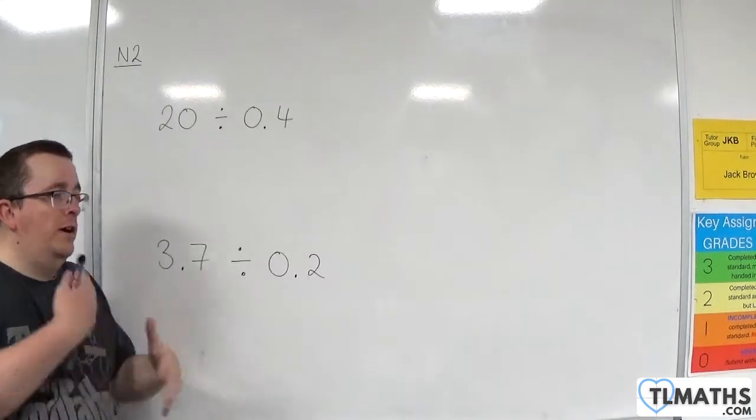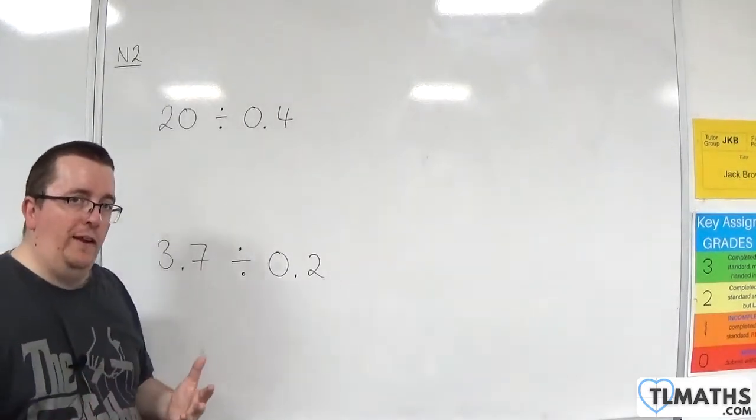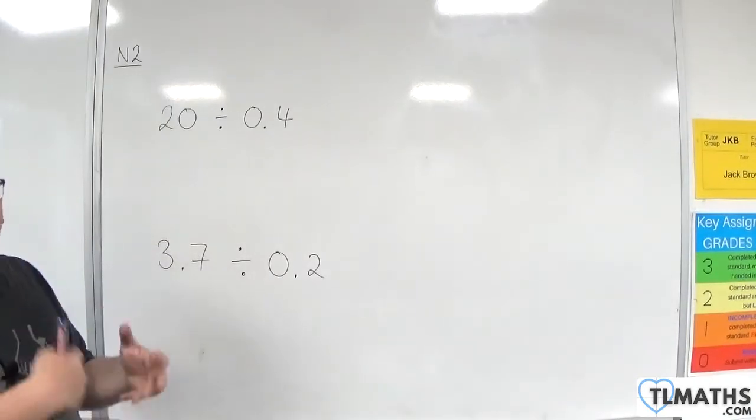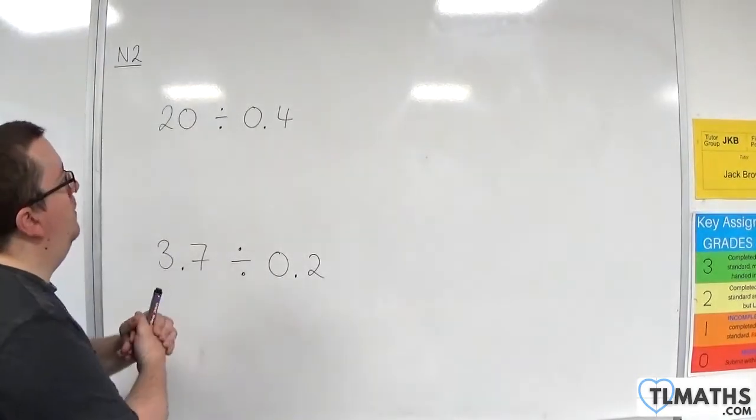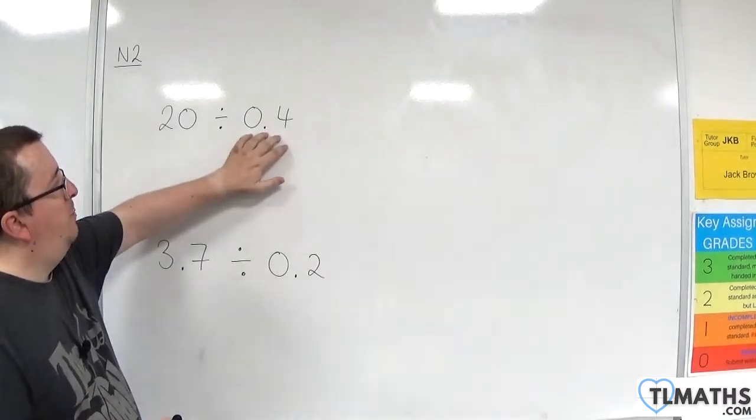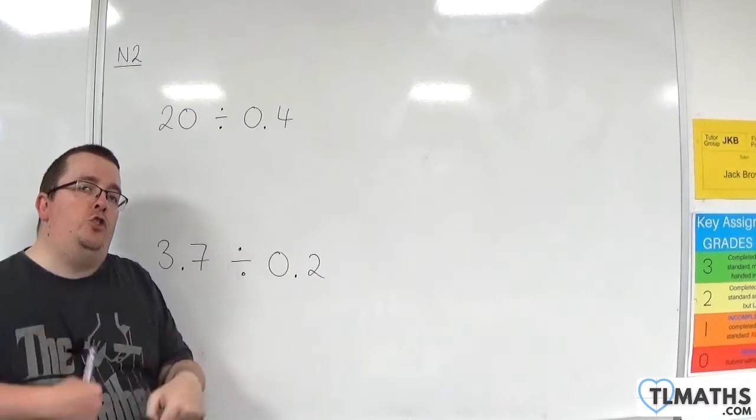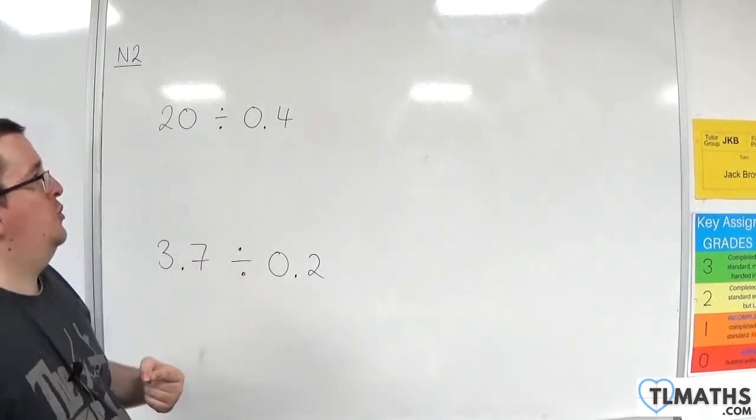If you've worked with fractions fairly recently, then you should know that whatever you do to the top of the fraction, you must do to the bottom when you multiply top and bottom of a fraction. If I multiply that by 10, I've got to multiply that by 10 in order to not change the size of the fraction itself.